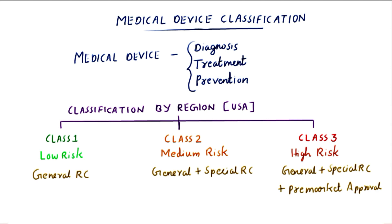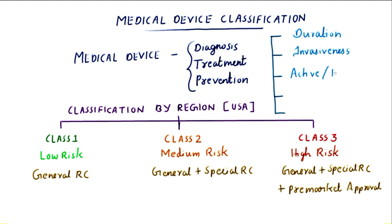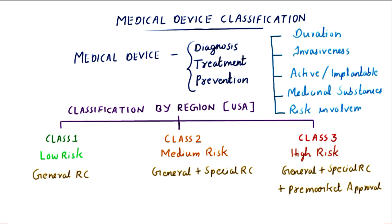There are certain parameters considered before classifying a medical device by FDA. The first one is duration — the length of time the device is used in the patient. The second is invasiveness — whether the device is surgically invasive or not. Third is whether the device is active or surgically implantable; active devices require external power to operate. The fourth is whether the device contains medicinal substances, and the last one is the risk involved when it is used in the patient.